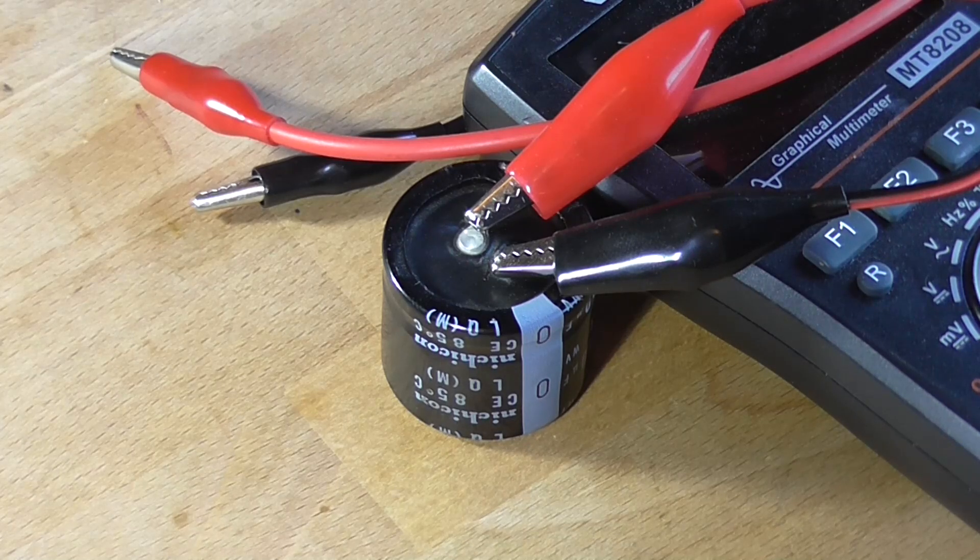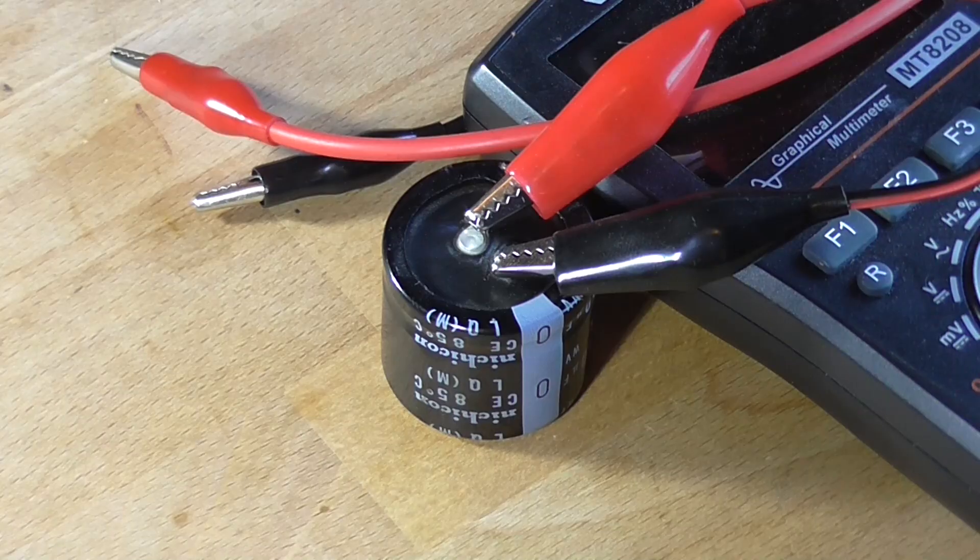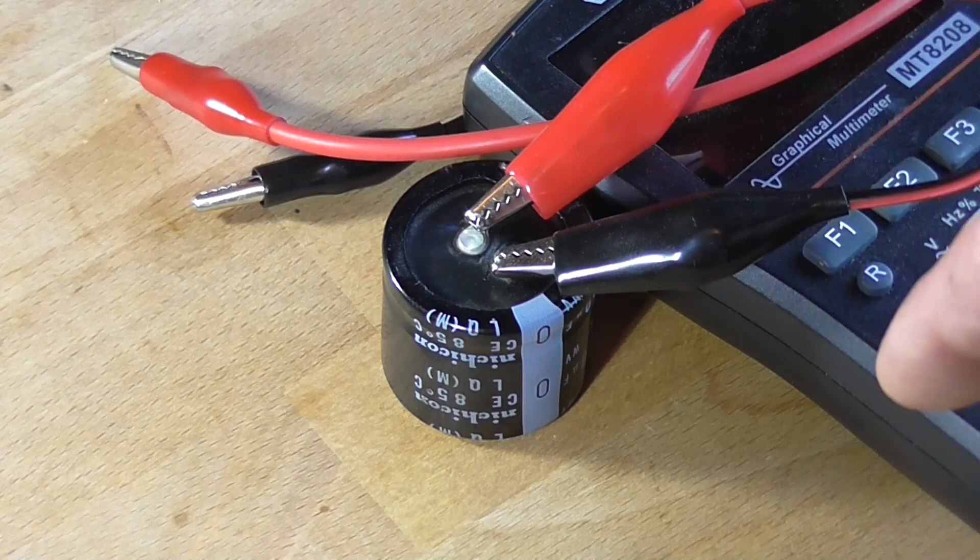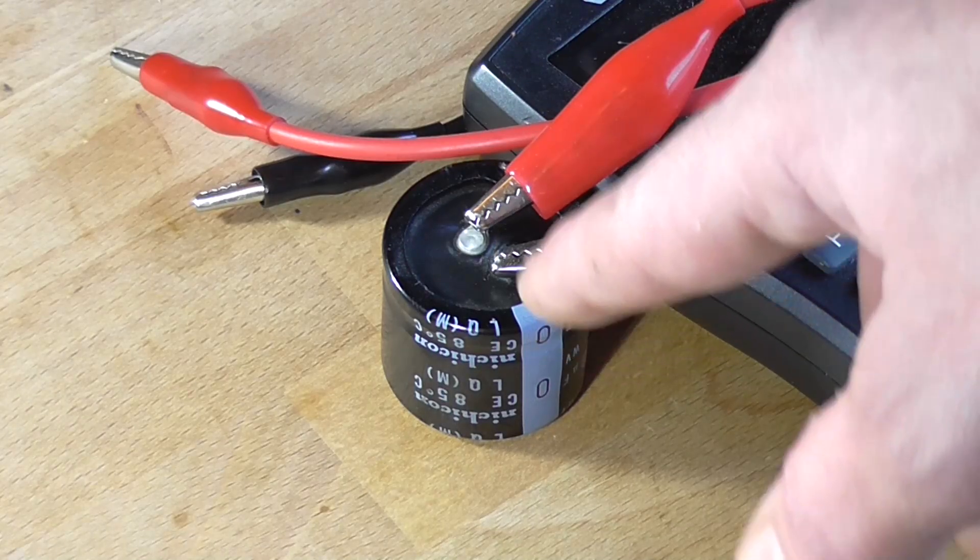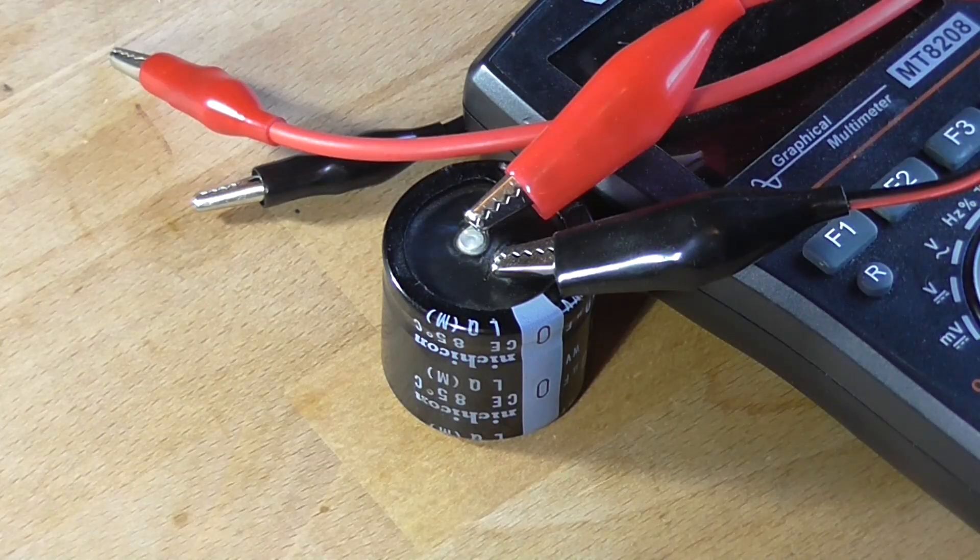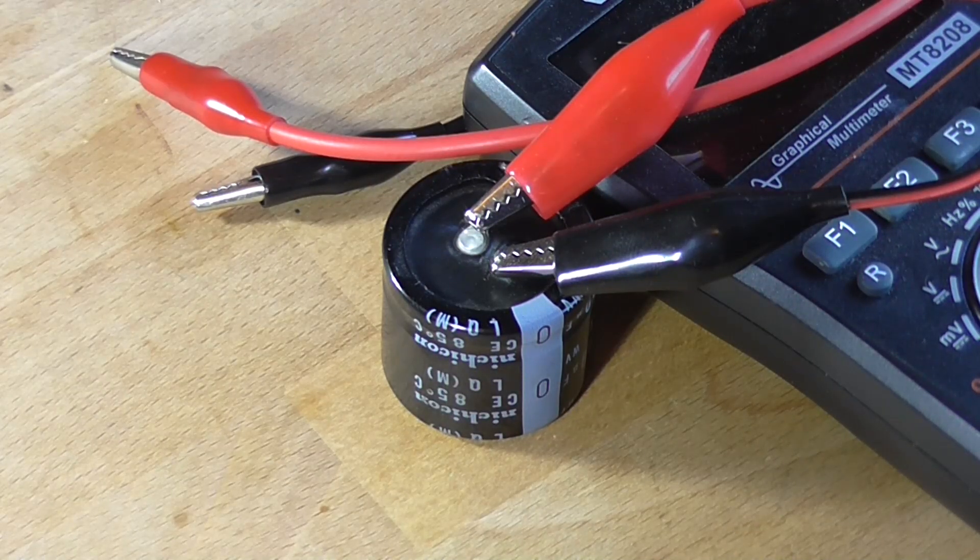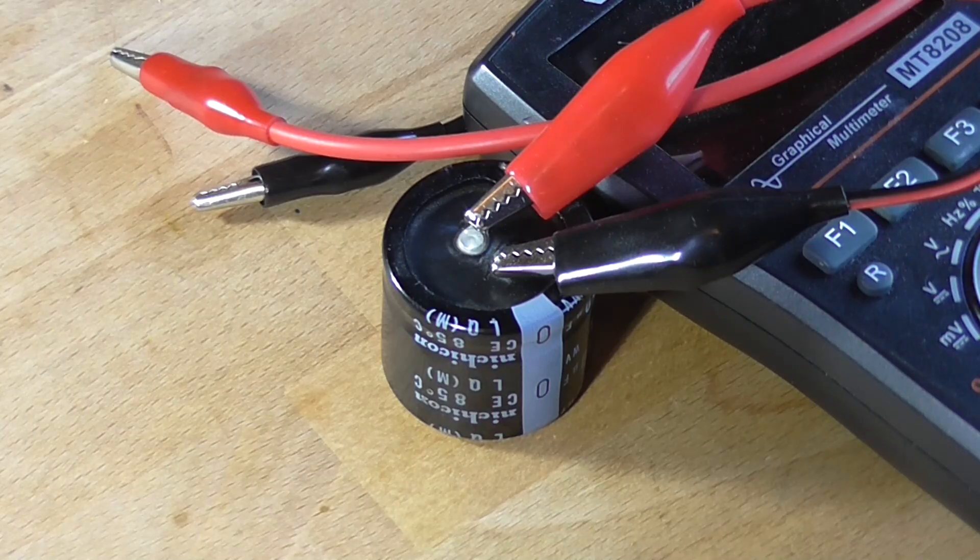And say an amplifier that has these in it has a bank that uses like six of them, well that is quite a hefty price tag to replace all six capacitors. So reforming would be one thing you would try first.